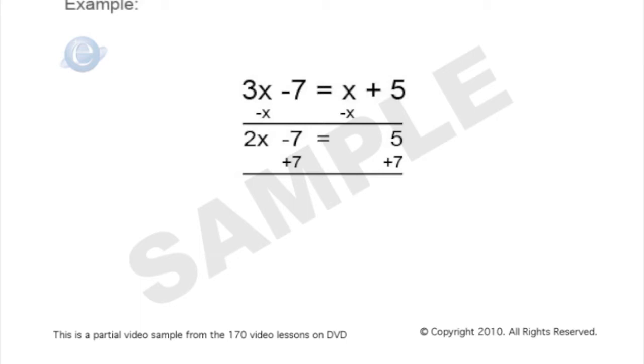When we go through this addition and subtraction, 3x minus x leaves us with 2x and 5 plus 7 leaves us with 12.